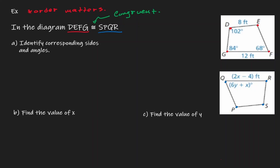Let's pause there for a second, because we are saying that these two objects are congruent to each other. If these two objects are congruent to each other, then we are saying that they are equal to each other. And if I have two objects that are equal to each other, I should be able to match up equal parts.